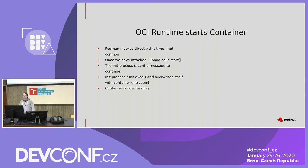Now we get to the final step. Podman invokes OCI runtime start — not conmon this time — and that contacts the init process that has been sleeping and tells it to wake up and move on to the next step: exec that bash process. This is not a fork-exec, this is just an exec. We overwrite runc with the new container process, the bash process. Since runc has already set up all these security features, already joined the cgroups, already set up namespaces, we now have PID 1 in our container and it has started running.